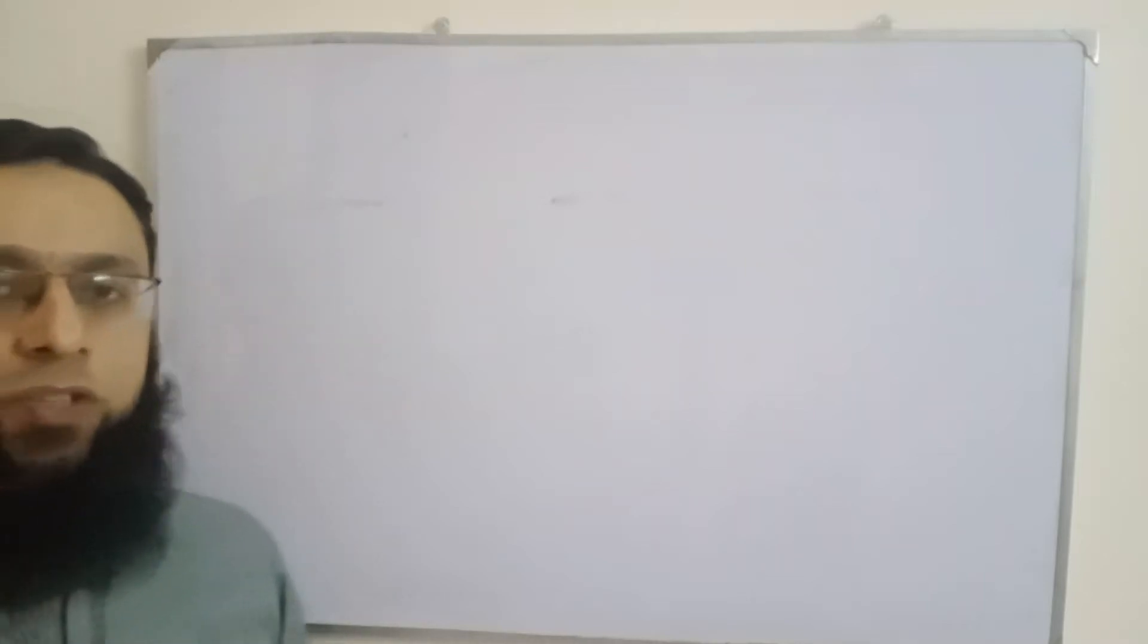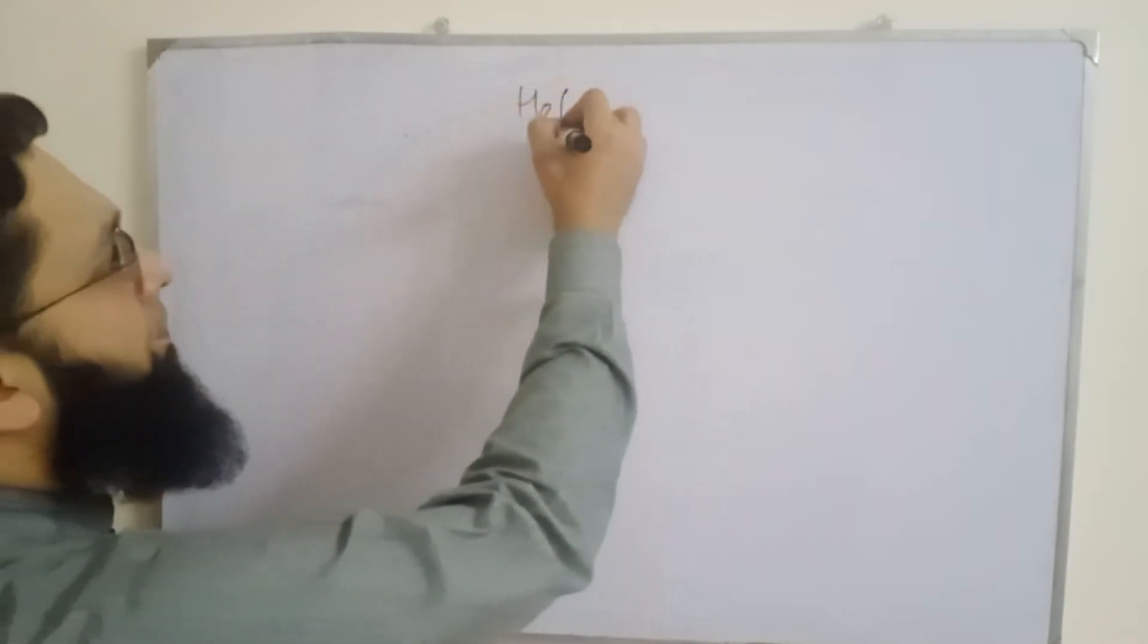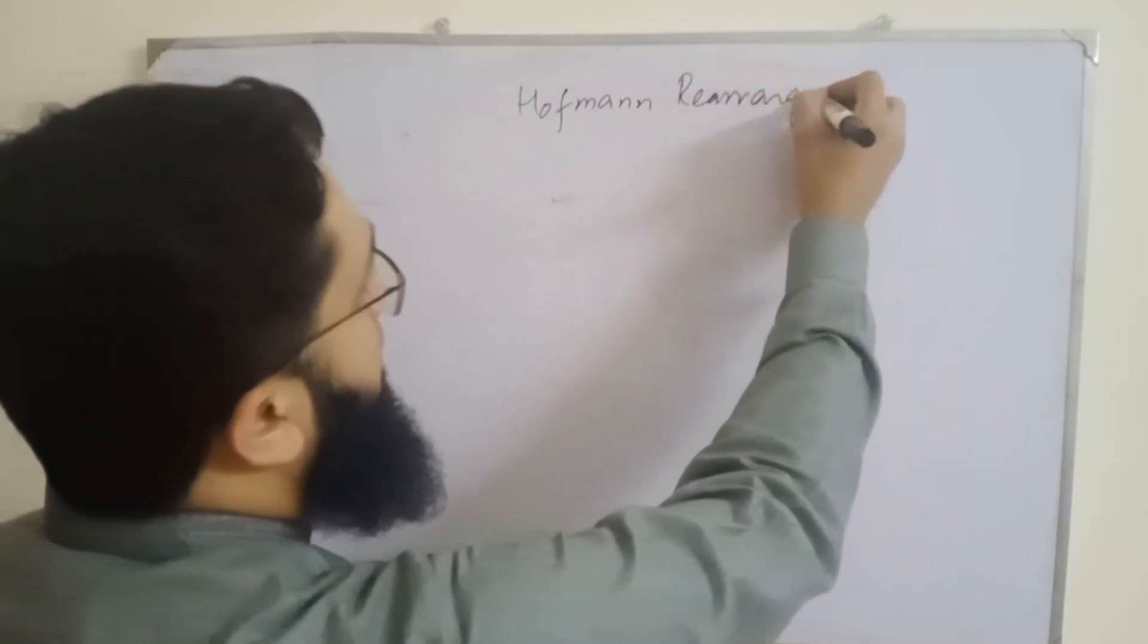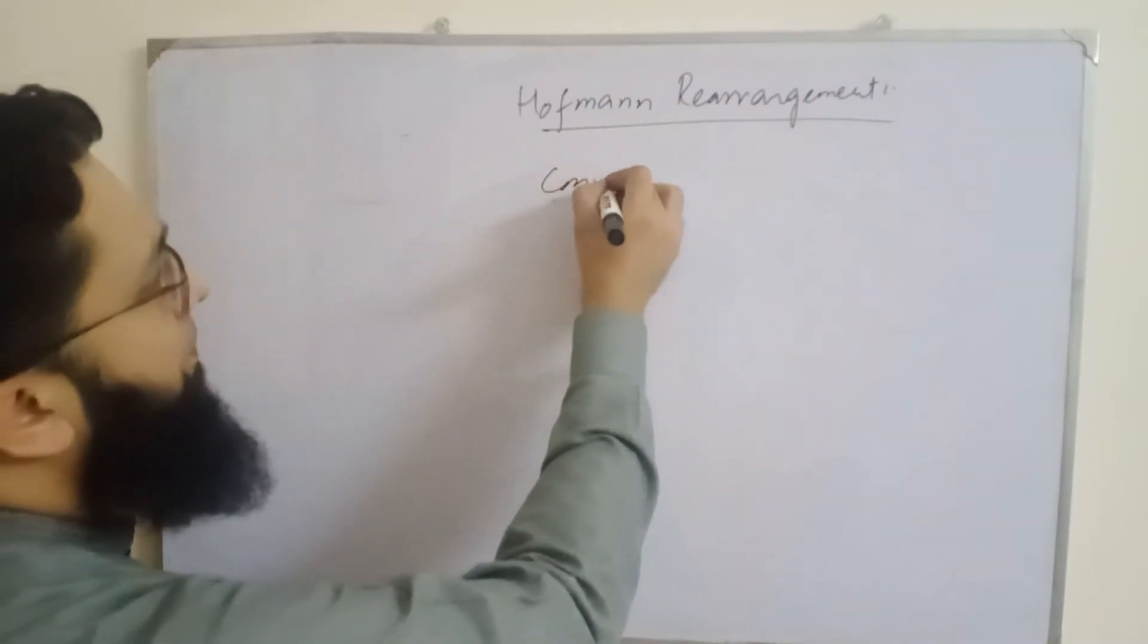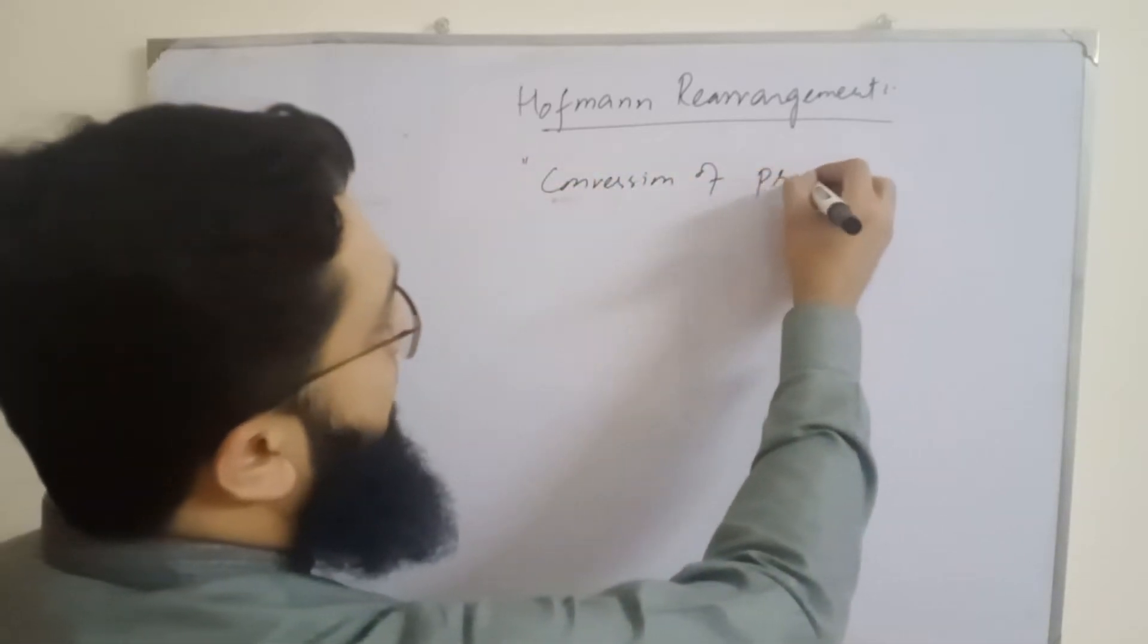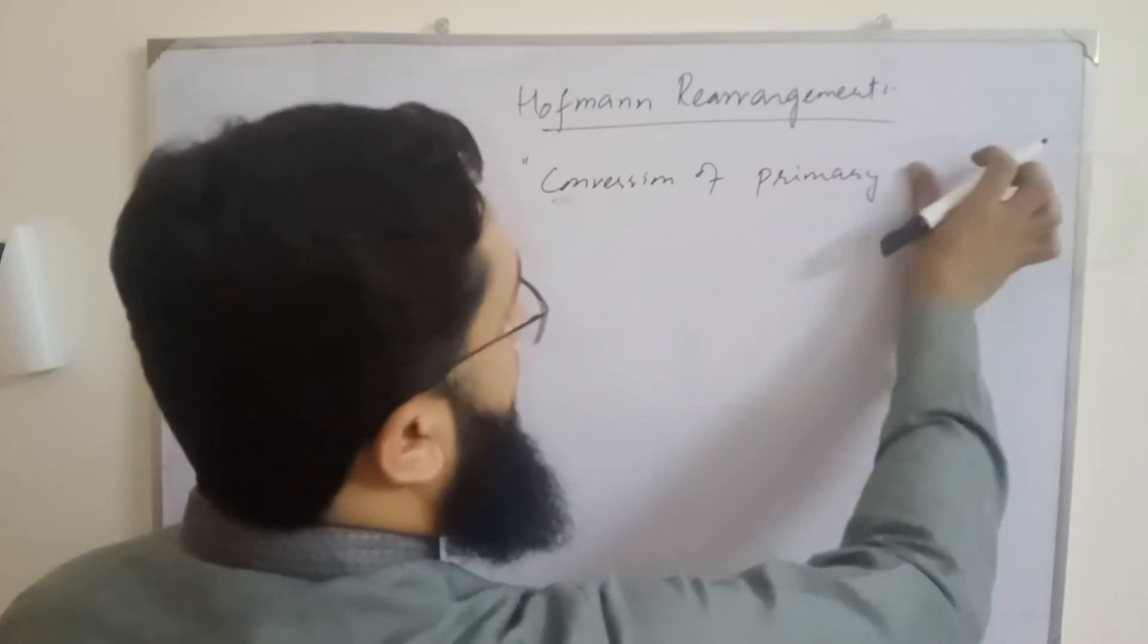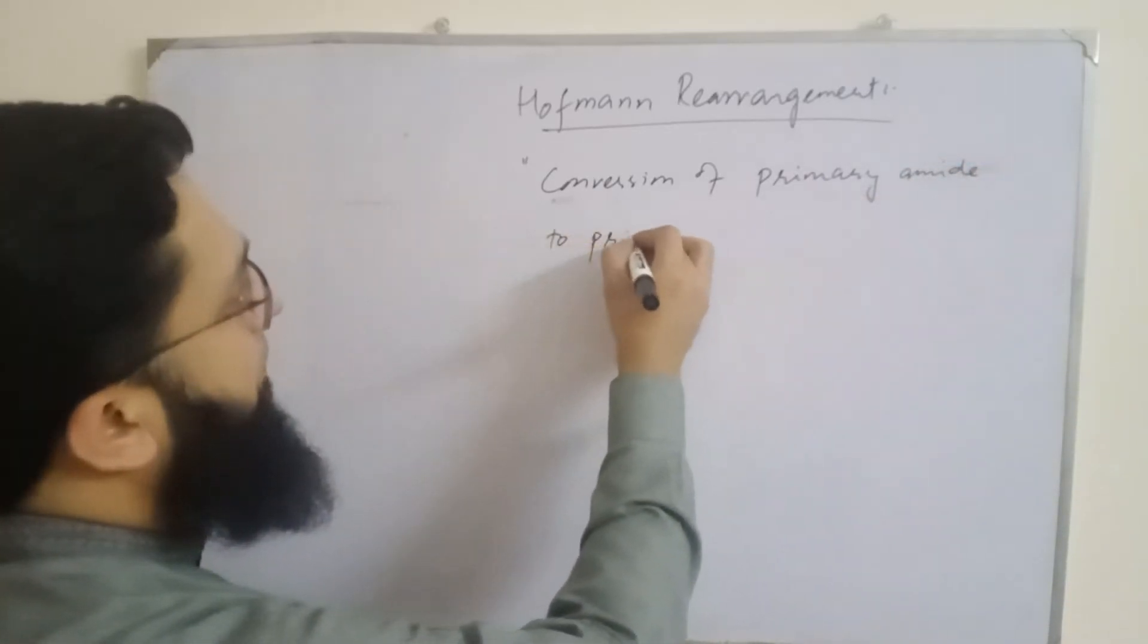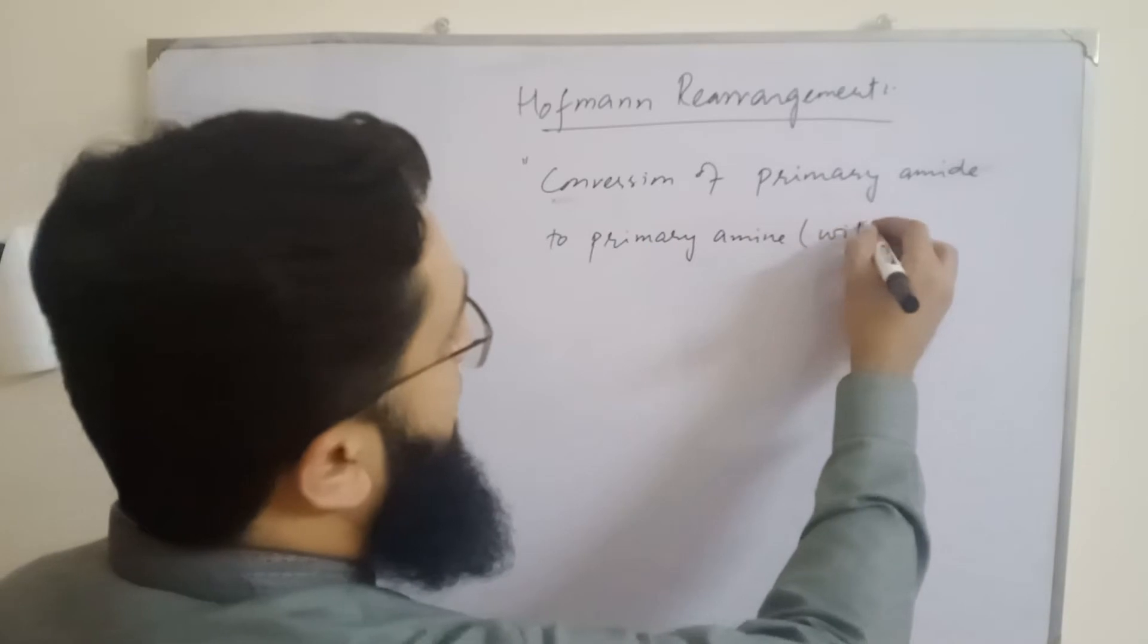Students, in this video we will talk about Hoffmann rearrangement. Hoffmann rearrangement is the conversion of a primary amide to a primary amine with one carbon short.